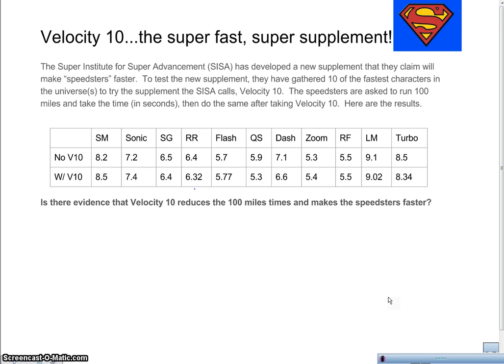So the Super Institute for Super Advancement, made up by me entirely, that's not a real place, has developed a new supplement that they claim will make speedsters faster. To test the new supplement, they've gathered 10 of the fastest characters in the known universes to try the supplement that the SISA calls Velocity 10. The speedsters are asked to run 100 miles and take the time in seconds, then do the same after taking the velocity 10. Here are the results.